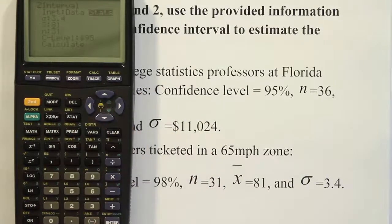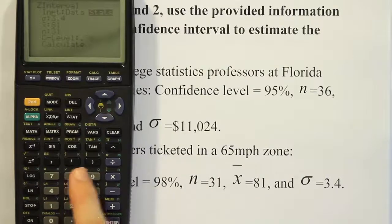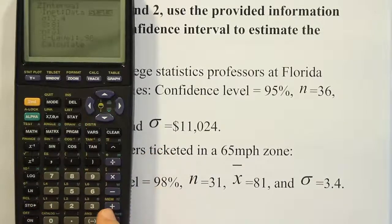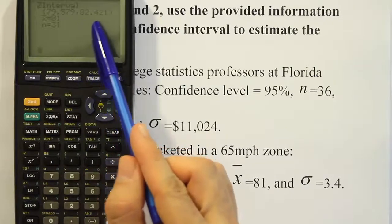And then it has the n value which is 31. And then lastly, the confidence level. And you can see our confidence level is 98%, so I'm going to do 0.98 there. Highlight calculate, hit enter, and I get the answer 79.579 up to 82.421.